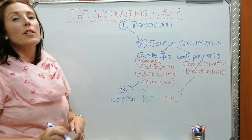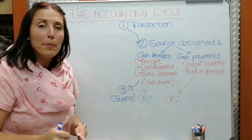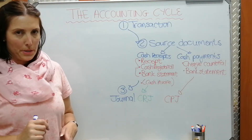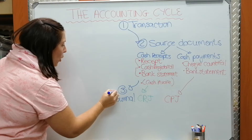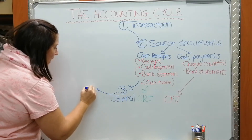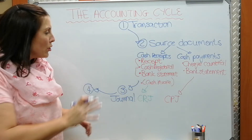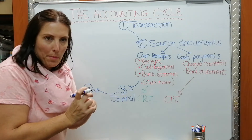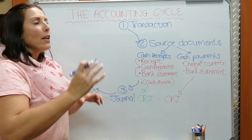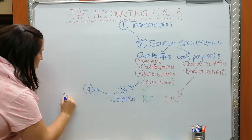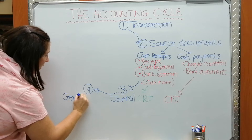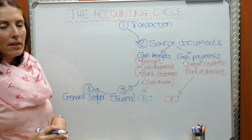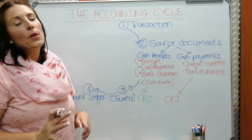The recording of transactions from the source document into our journals is done on a daily basis as the transactions take place. At the end of each month we move on to step four — we take all the information in the CRJ and CPJ, compress and summarize it, and post it to the General Ledger.